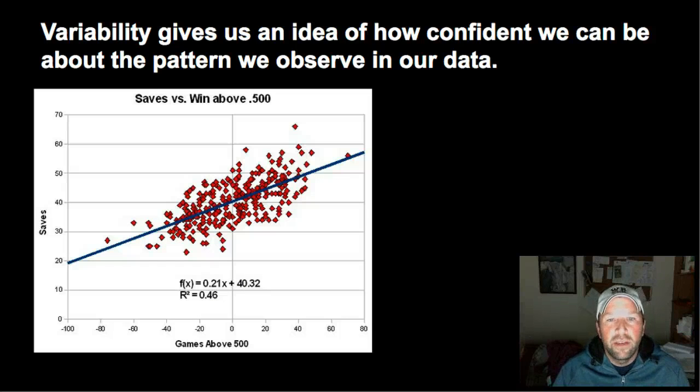Variability basically gives us an idea of how confident we can be about our data and about the patterns that we observe. Here's an example graph showing the number of saves for a baseball team in relation to how many games above 500 they are. So it's looking for a relationship there. Do teams that have more saves also have a better record over 500? And you can see they've plotted all these points and made a best fit line, and then down below it gives the equation for that line and also the r-squared value. Now r-squared is one measure of variability. It tells us how well those data points fit to that line. In this case the r-squared is 0.46, which is actually pretty low. Any r-squared below 0.5 is generally considered not a very strong relationship or fit. R-squared values above 0.8 are often considered a very good fit. So in this case the relationship between saves and the record above 500 for baseball teams is not actually very strong. There are probably other factors that explain their record or explain the number of saves.